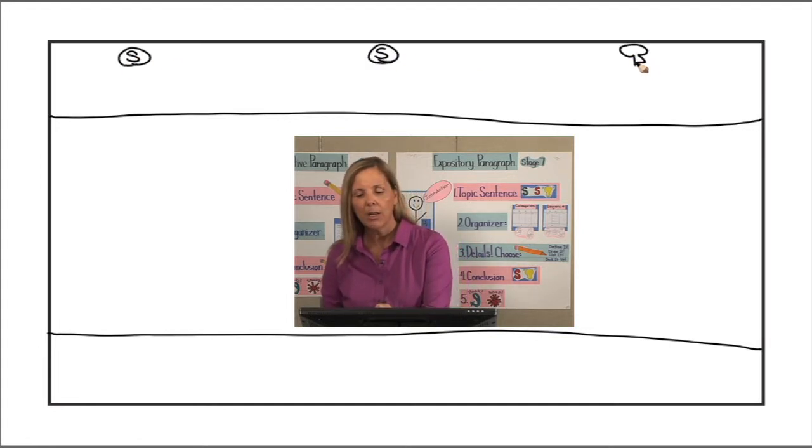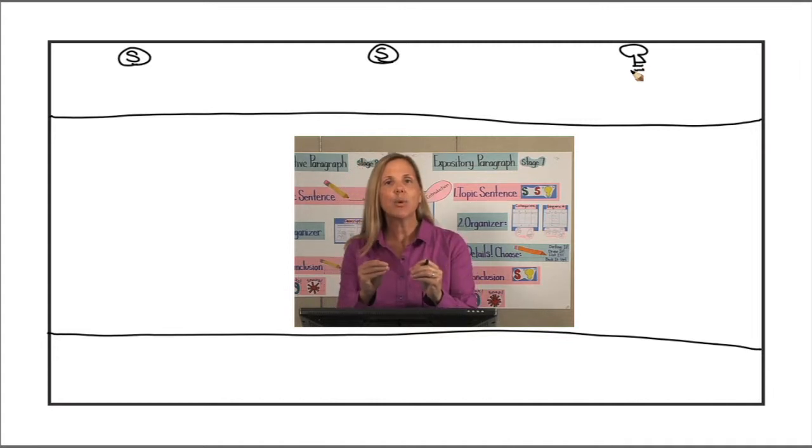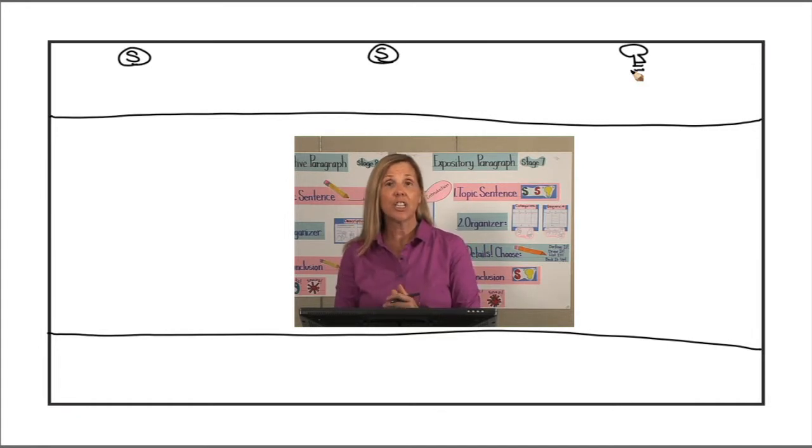Step one: topic sentence. We need to tell the big idea about our paragraph. Our secret formula is SS light bulb. The first S is setting—it tells us time and place. The second S is subject—who or what is this information about? The light bulb is the big idea—why is it so important? When we answer all this information, we have everything we need for a topic sentence. We go to the middle S first—subject. This information is about dolphins.